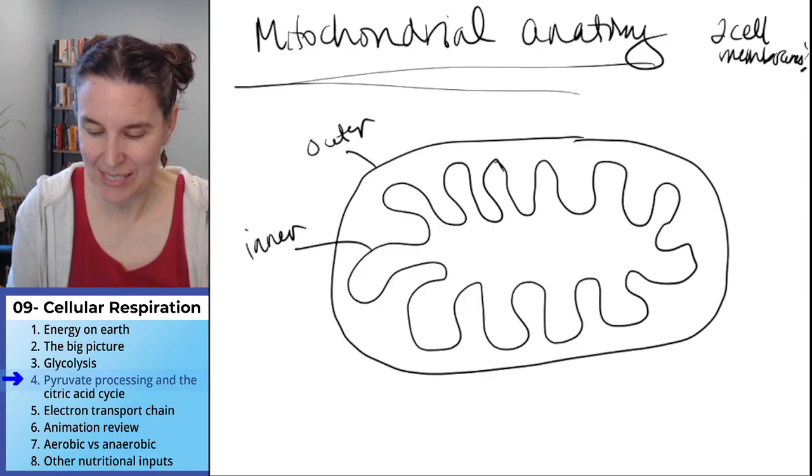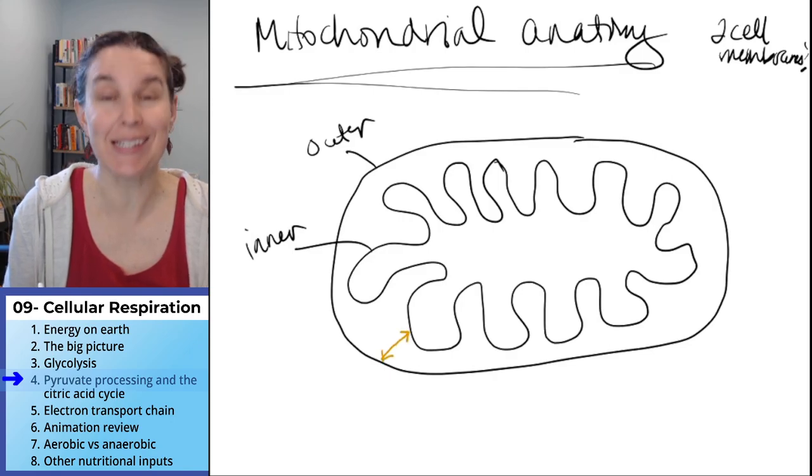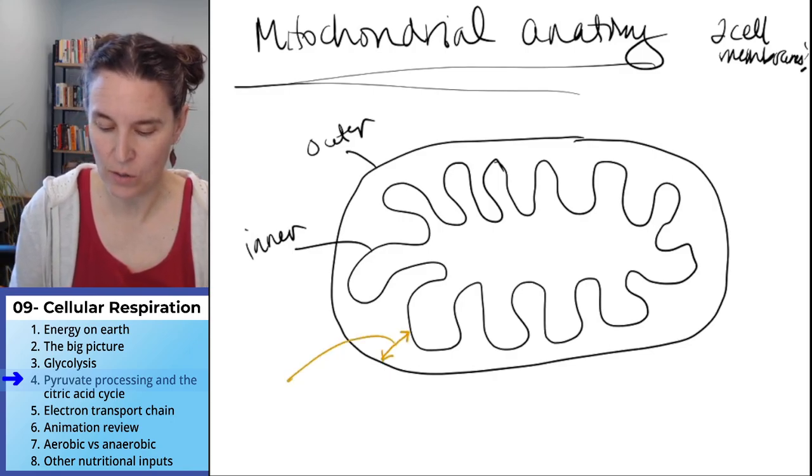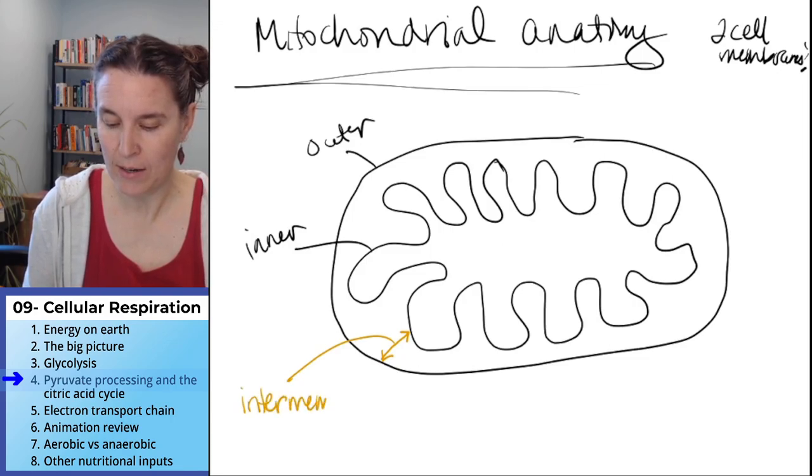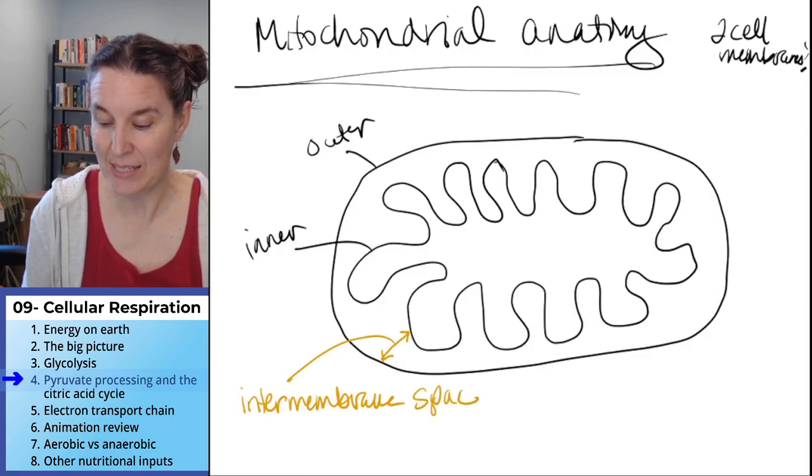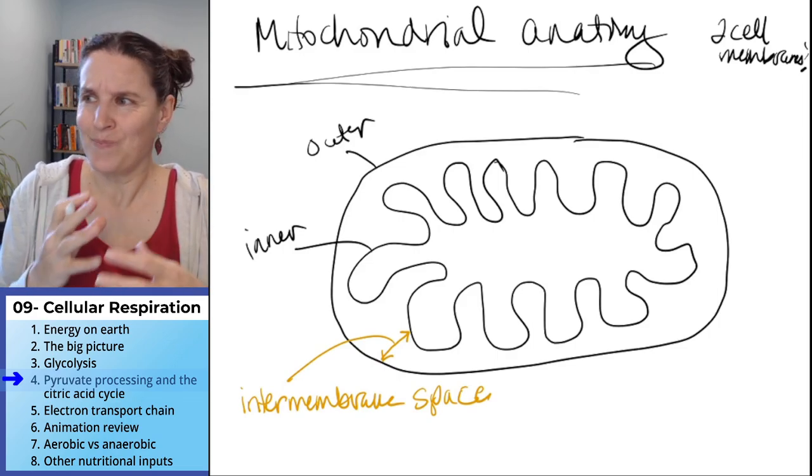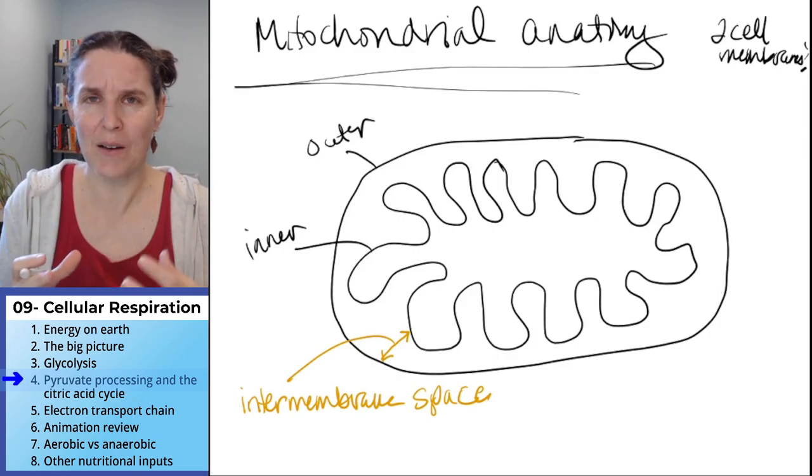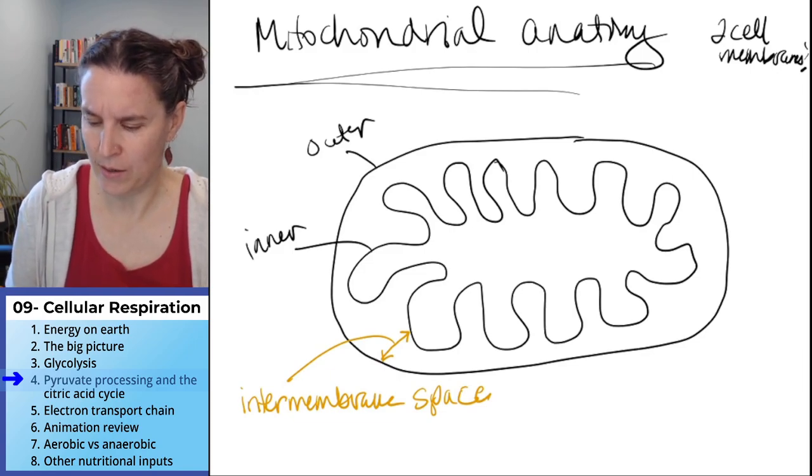And the space in between the inner and the outer has a name. And that is called the inner membrane space. This is an important location. The cytoplasm of the mitochondrion is in the middle here. And it's called the mitochondrial matrix.